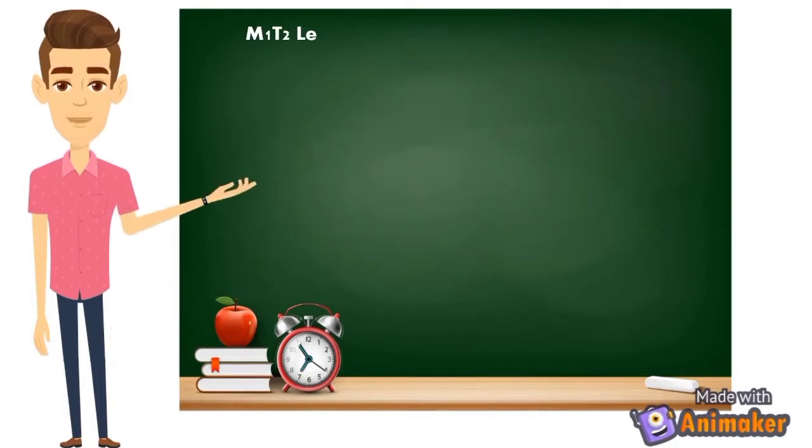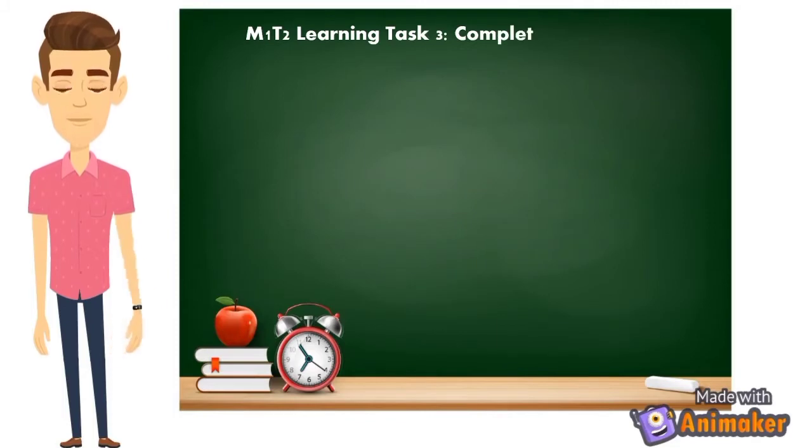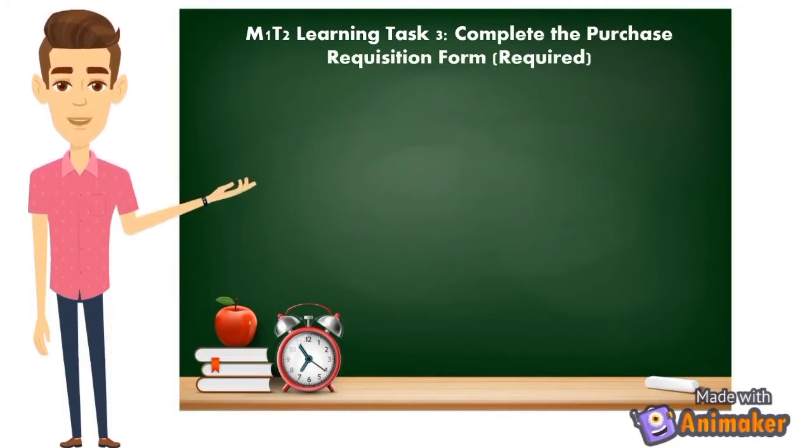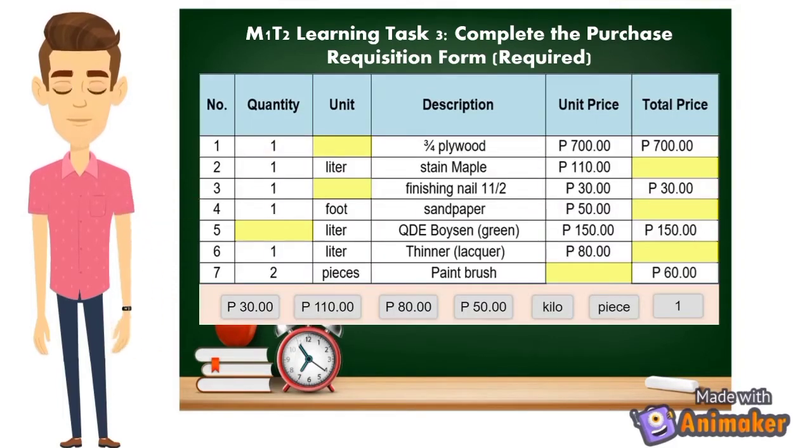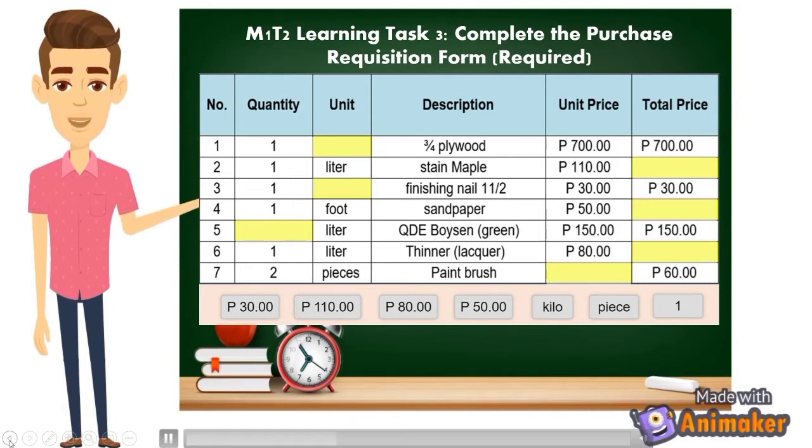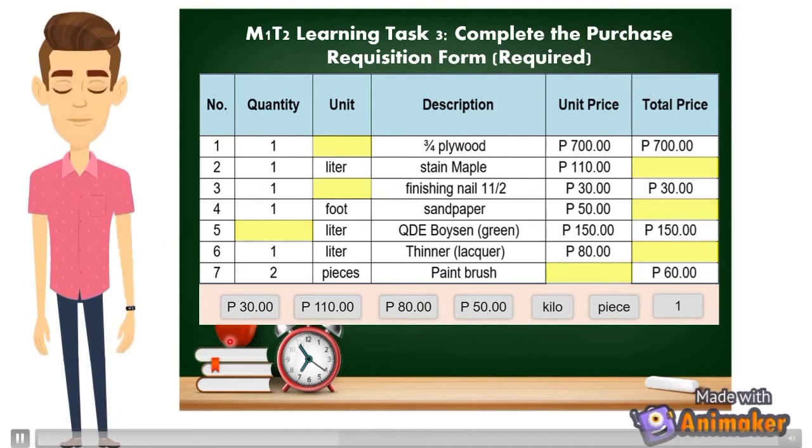For activity number 2, learning task number 3, all you have to do is to complete the purchase requisition form. This is the requisition form that you're going to complete. All you have to do is to drag these items on the yellow cell.